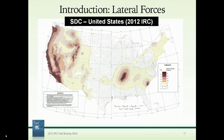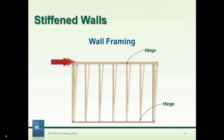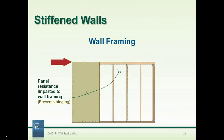A similar map shows seismic design categories — the west coast has very high categories, some in the middle of the U.S., and the Charleston, South Carolina area. Let's talk about stiffened walls and the purpose of bracing: once you've nailed studs to plates, the wall assembly can rack quite easily. Wall bracing — whether a diagonal brace, a sheet of OSB, or the variety of other methods in the code — stiffens the wall and prevents that hinging or racking effect.